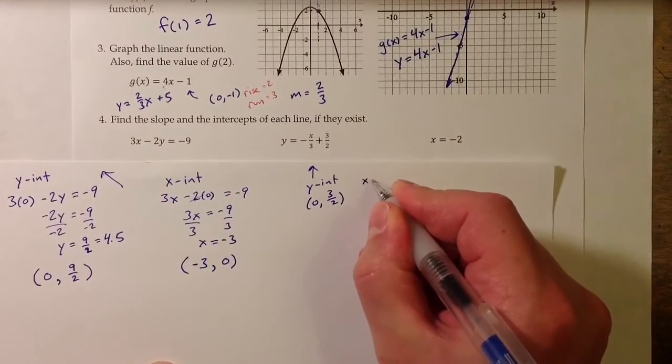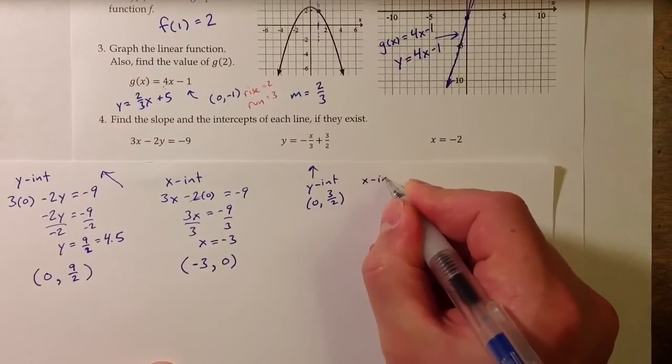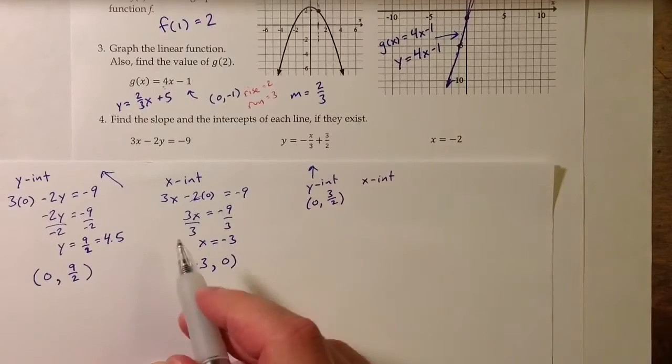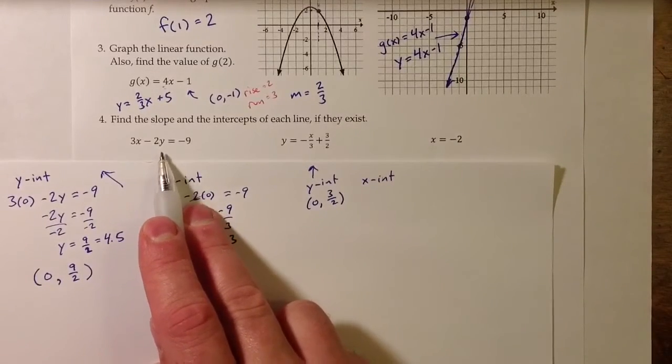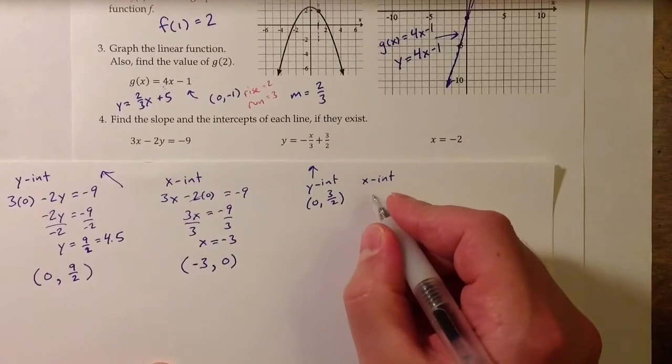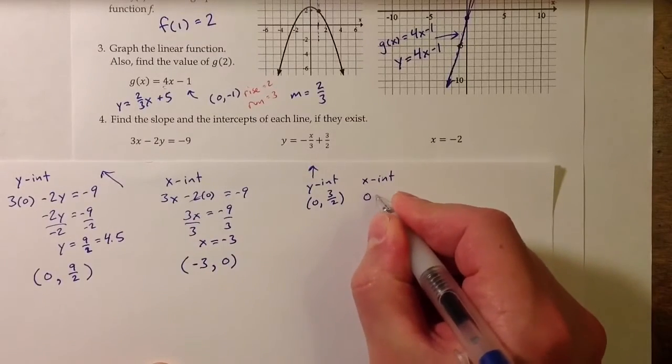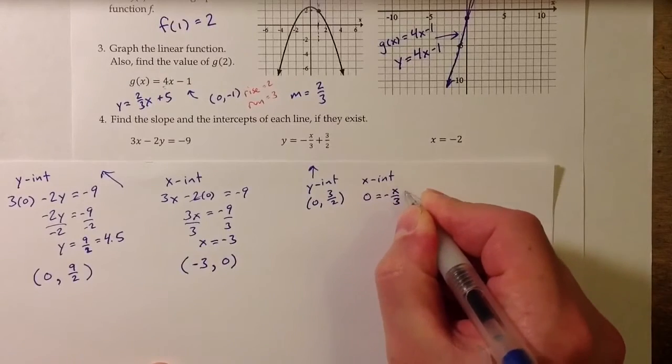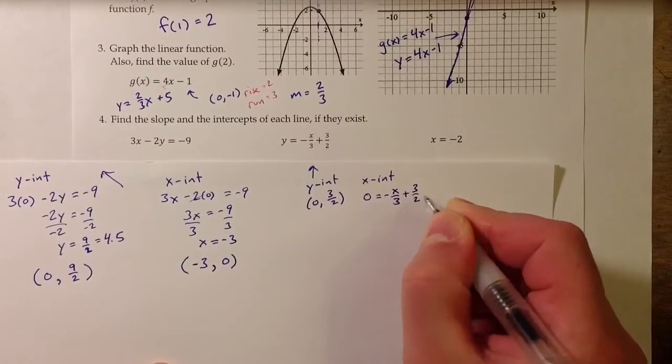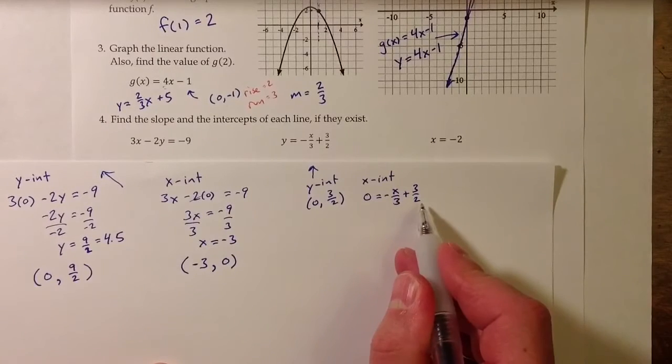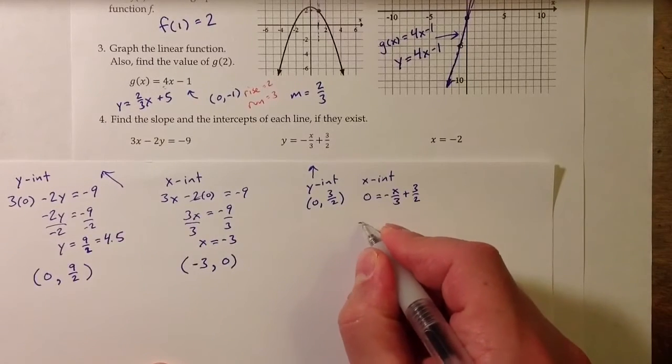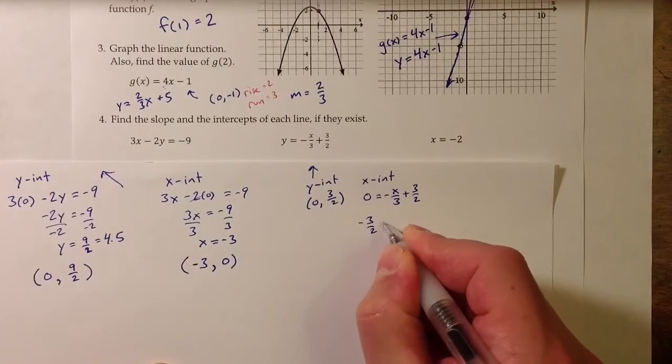The x-intercept is a little more of a challenge, but we can find it the same way we found the x-intercept of the first equation. If I plug in 0 for y and solve for x, I can subtract 3 halves from both sides.